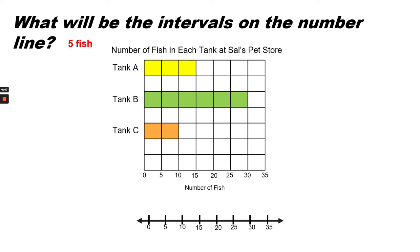Well, they should match the intervals on the graph. So, 5 fish. Notice the number line at the bottom has intervals of 5 fish.